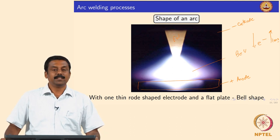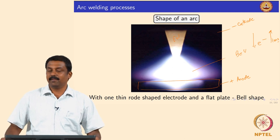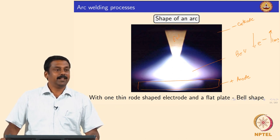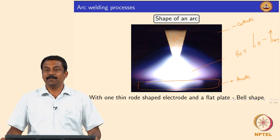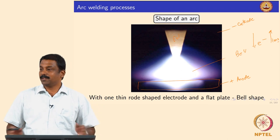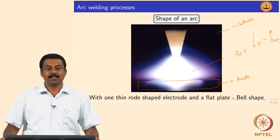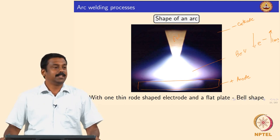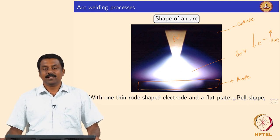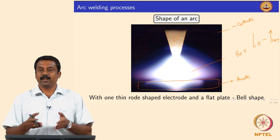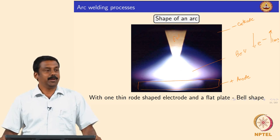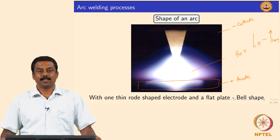Suppose you are trying to weld a material that has a strong oxide layer — for example, aluminium. Aluminium has a strong oxide layer, so you need to remove it. Bombarding with ions is beneficial because you are cleaning the surface. However, if you make the workpiece negative so all the ions reach the surface, the surface will be very clean but you are sacrificing penetration.